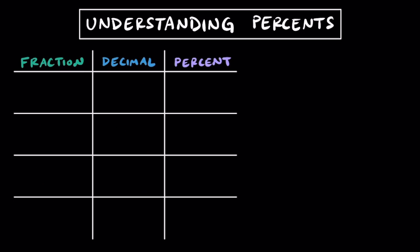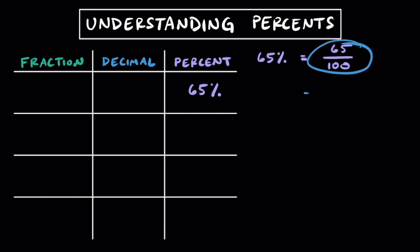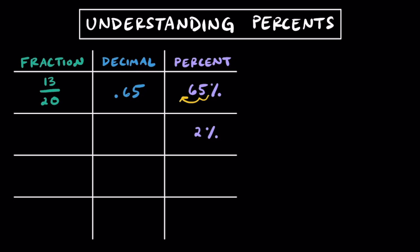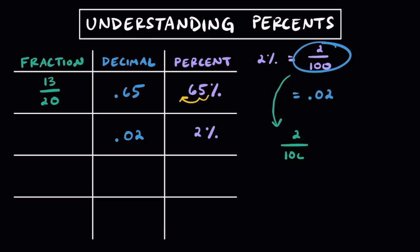Now let's work on turning these ratios from percent form into decimal and fraction form. When we have 65%, think about this as being per 100, so we can write it as 65 over 100. If you read this fraction as 65 hundredths, then you can write it as a decimal: 0.65. The shortcut to get from a percent to a decimal is to slide the decimal twice to the left and get rid of the percent sign. Dividing by their GCF of 5 on top and bottom, we get a simplified fraction ratio of 13 to 20. Now let's check out 2%. 2% means 2 per 100, or 2 hundredths, which we write as 0.02. Simplifying 2 over 100 by dividing by their GCF, we get 1 to 50.